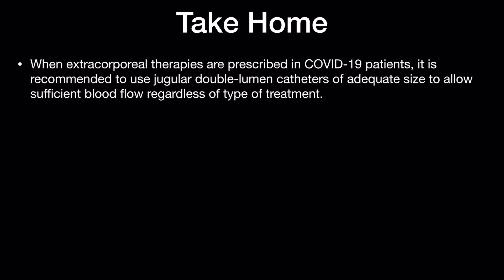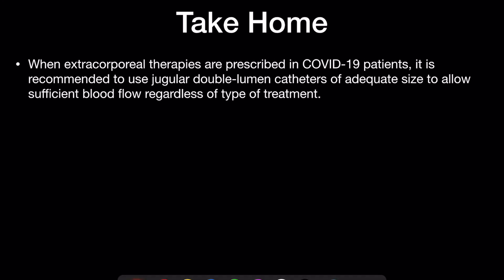The take-home message for using these devices: it is recommended to use a jugular double-lumen catheter for adequate flow. Do not place it elsewhere because flows will not be adequate. A very good flow is required, and the right jugular placement is best.